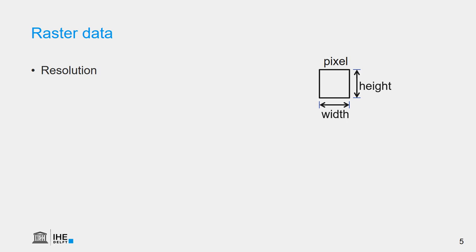When we speak about a spatial resolution of 30 meters, it means that the pixel has a width of 30 and a height of 30 meters. In the pixel, we store the data.